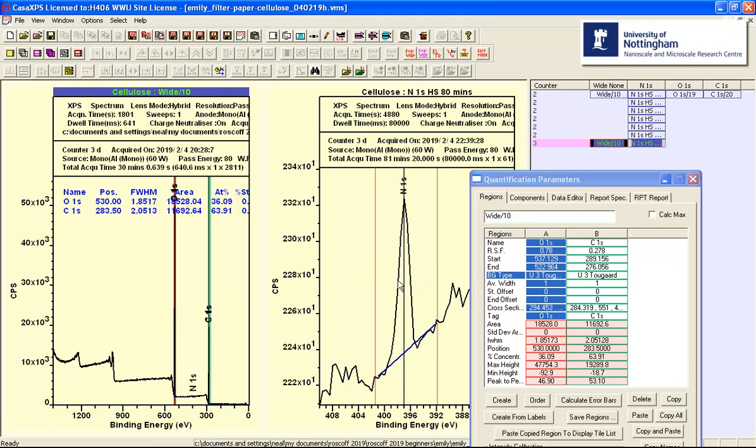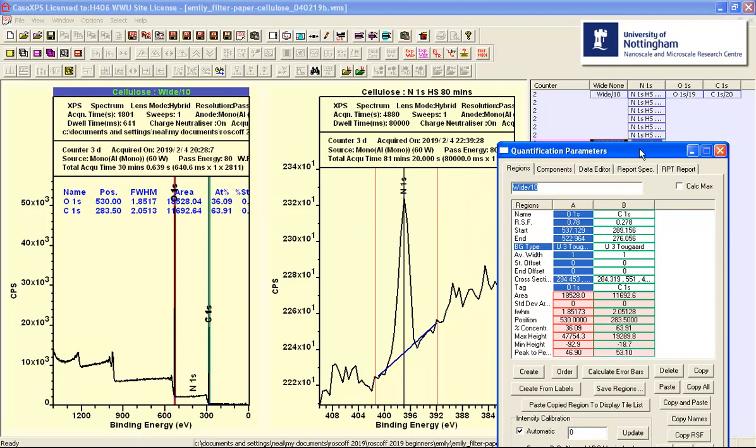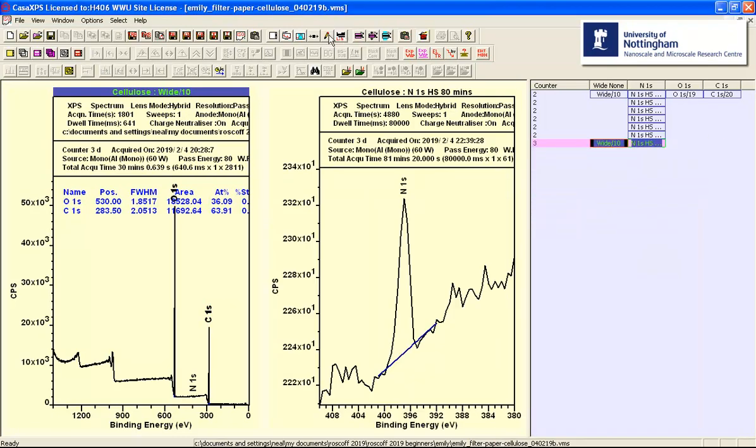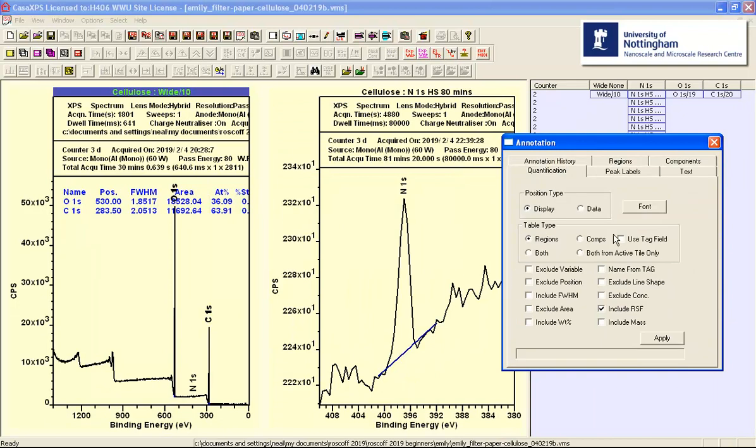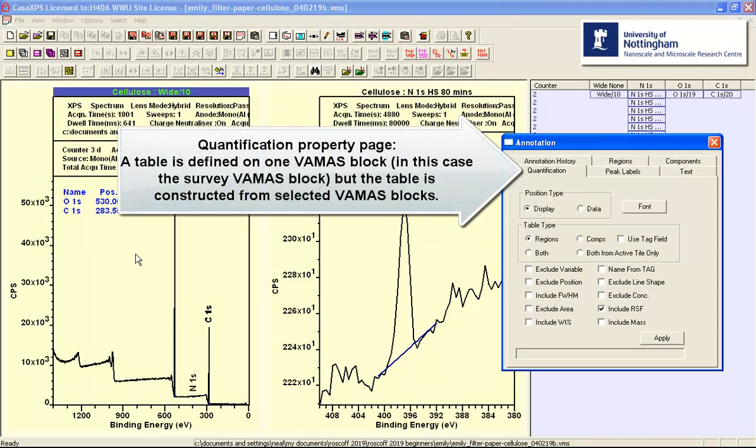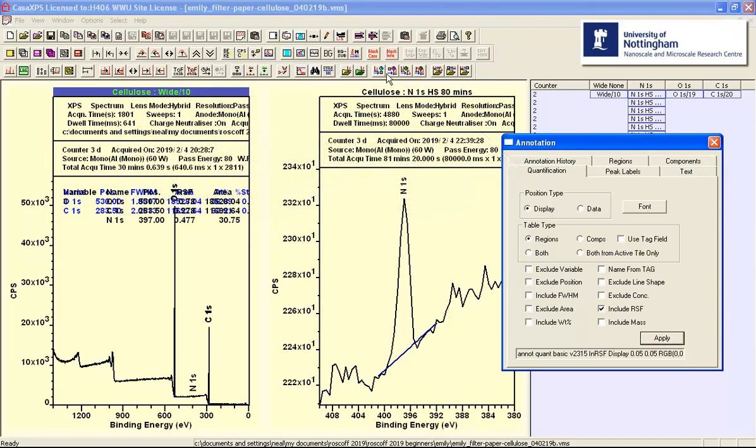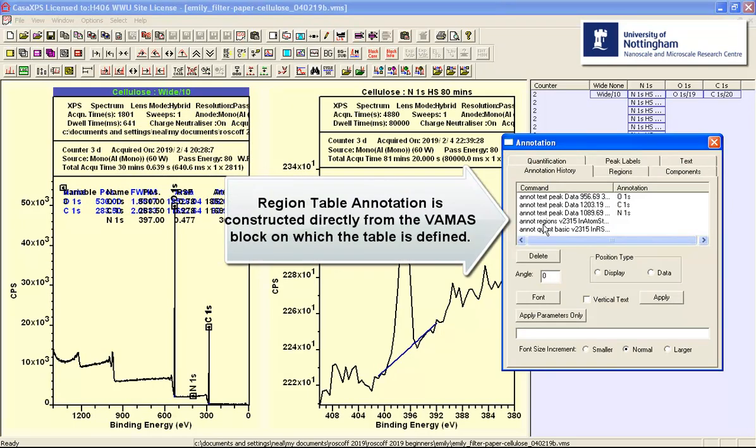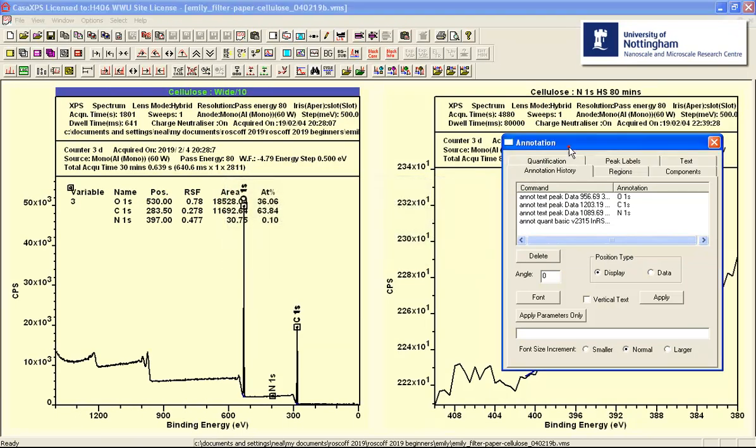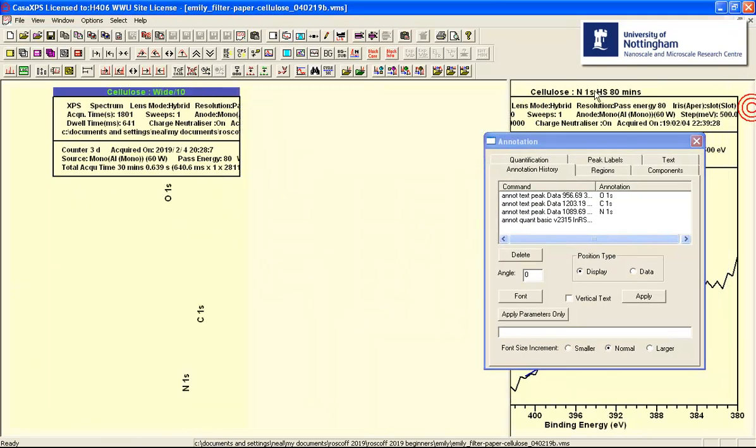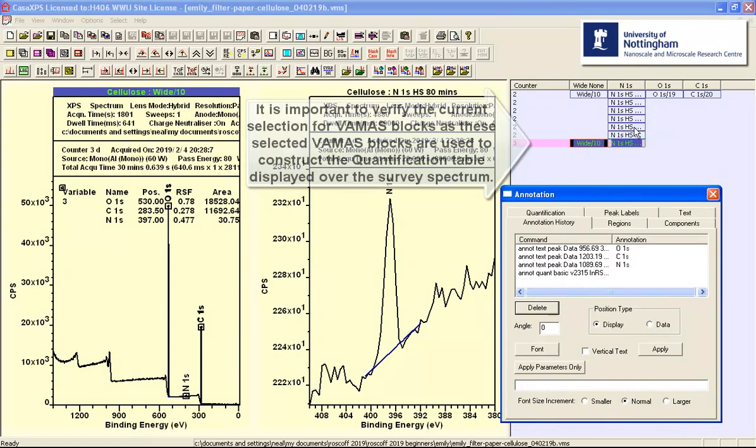But nevertheless, these are peak areas that will be calculated in counts per second EV. So we can quantify these data against the survey data, just as you would do with high resolution spectra. But to do this, I'm going to have to use a quantification table that is defined on the survey spectrum. And we'll include the relative sensitivity factors so we can see these. I'm just going to delete the region table so we can see it clearly.